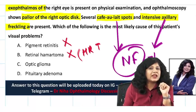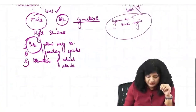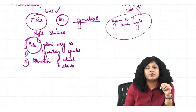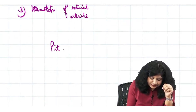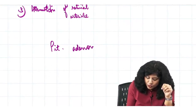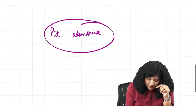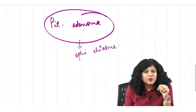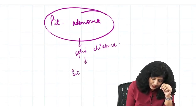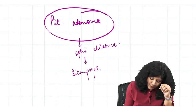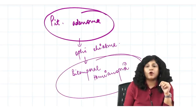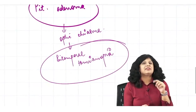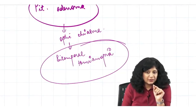What about pituitary adenoma? Pituitary adenoma compresses the optic chiasma, and because it is compressing the optic chiasma, what you get is bitemporal hemianopia — a typical pattern of vision loss. This is a bilateral field defect, which is different from the unilateral optic nerve problem in this patient.